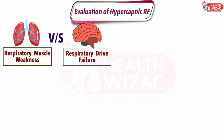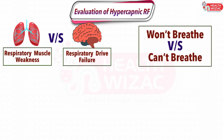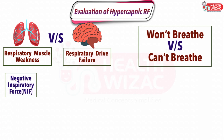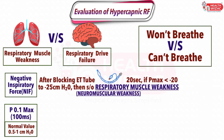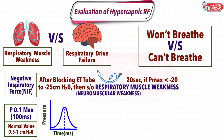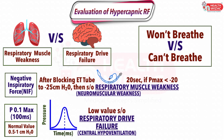An important step in the evaluation of hypercapnia is to rule out the cause resulting from respiratory muscle weakness versus respiratory drive failure, also called 'Won't Breathe' versus 'Can't Breathe.' This is done by two tests: NIF or Negative Inspiratory Force, and P0.1 Max. NIF is done by occluding the ET tube for 20 seconds and measuring the maximum pressure the patient can generate. If it is less than minus 20 to minus 25 cm of water, it is suggestive of respiratory muscle weakness due to neuromuscular causes. P0.1 Max measures the degree of pressure drop in the first 100 milliseconds after breath initiation; a low value is suggestive of respiratory drive failure, usually present in central hypoventilation.